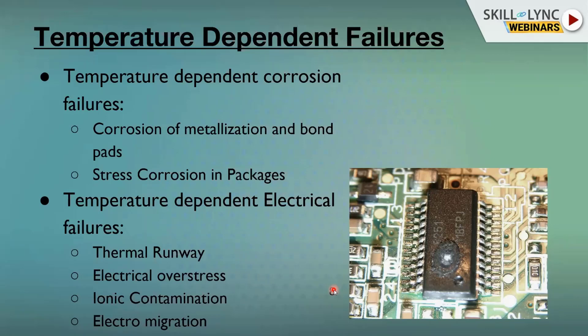After thermal runaway we have electrical over stress. This is just a positive effect — the die is made of silicon, and silicon has the property that with an increase in temperature there is a decrease in resistance. This means higher current flow through the die, which increases junction temperature. Overall, this causes catastrophic damage to the electronic component.